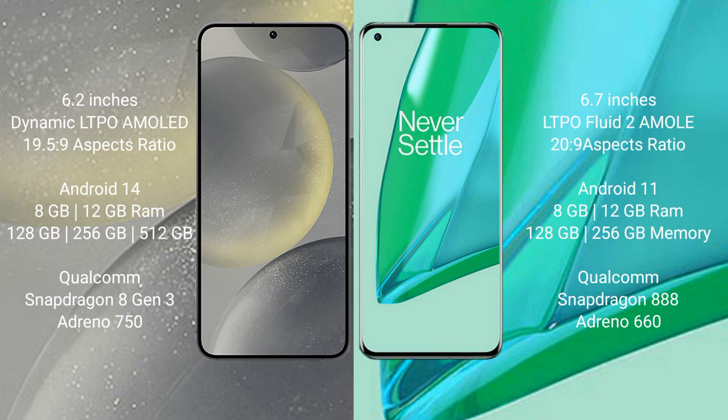OnePlus 9 Pro comes with 8GB and 12GB RAM, and 128GB and 256GB internal storage, with a Snapdragon 888 processor, 8GB and Exynos 660.